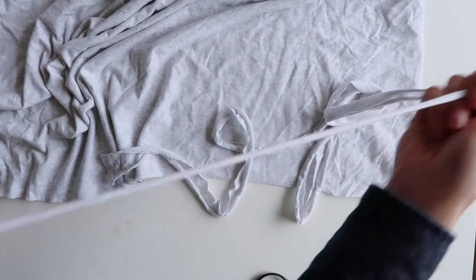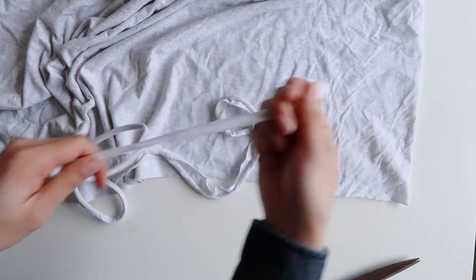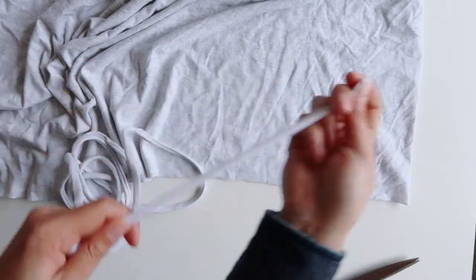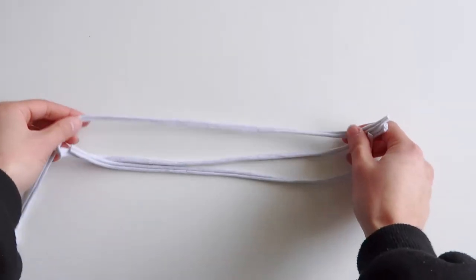Basically you cut strips of your old t-shirt or your remnant. It must be a stretch jersey, so like a t-shirt material, so that you can pull it out like this. Basically cut it into inch wide strips, pull it out and voila, you will have t-shirt yarn.